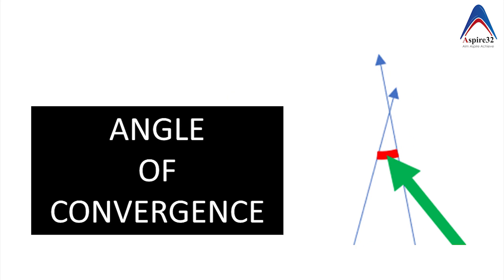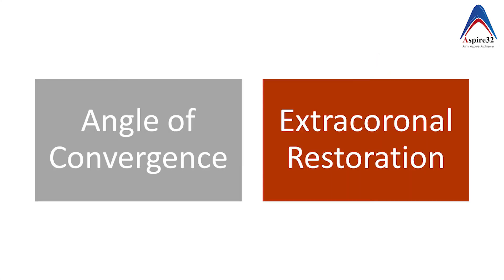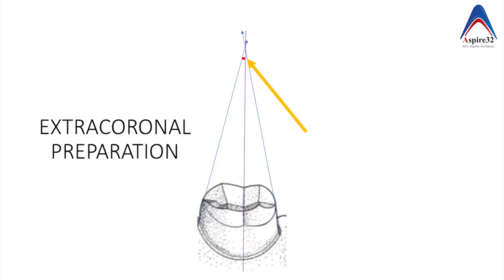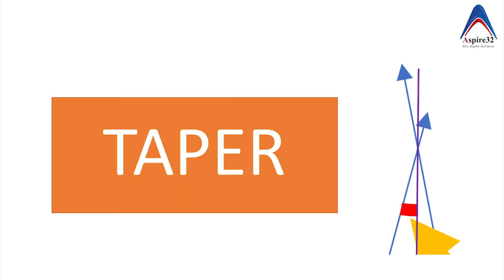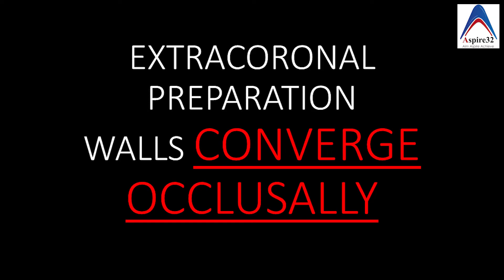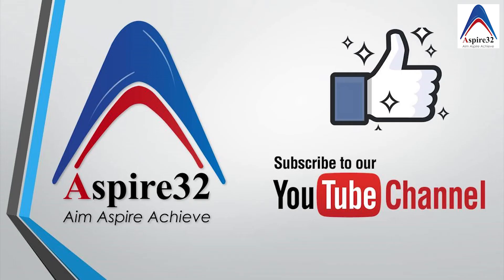This total angle formed at that junction is called the angle of convergence because these two walls are converging. If you draw a line in the center parallel to the long axis of the tooth, this total angle will be split into two halves — each half then represents the taper.